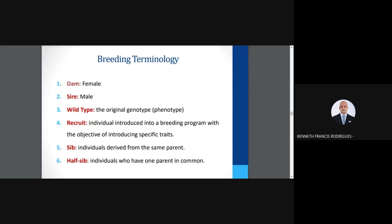'Sib' refers to individuals derived from the same parents — when you cross a dam and a sire, the progeny are called sibs. 'Half-sib' refers to individuals who have one parent in common, for example, two dams and one sire, producing half-siblings. These are terms you should remember throughout your research, as publications will reference them in general literature.